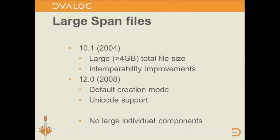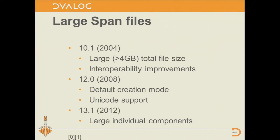You had to explicitly say you wanted large span files by putting a 64 on the quad F create. Although the file could be big, the individual components were still limited to a maximum of 4 gigabytes. In 12.0, large span files became the default creation mode. At that time we added Unicode support. Finally, in 13.1, large individual components came along. In 13.0 in 2011, we officially announced that small span component files were no longer to be supported other than in reading from version 14 onwards.